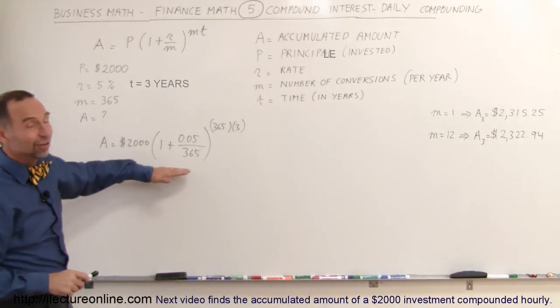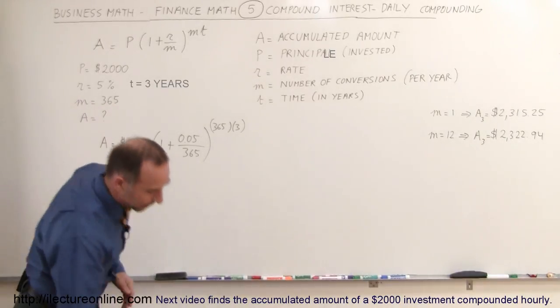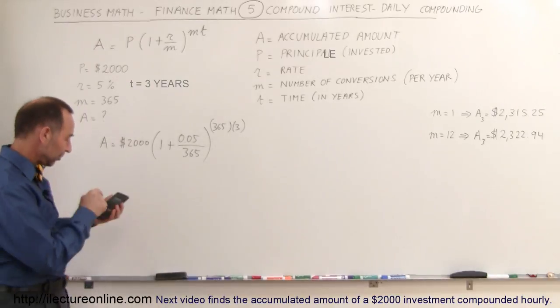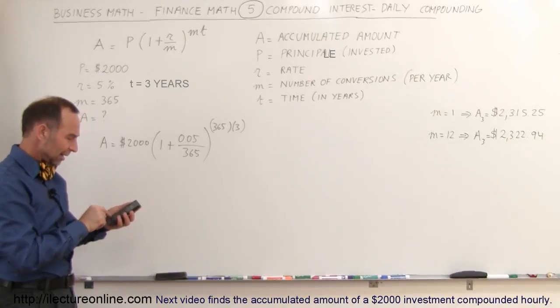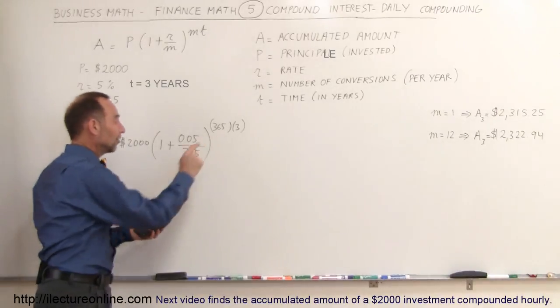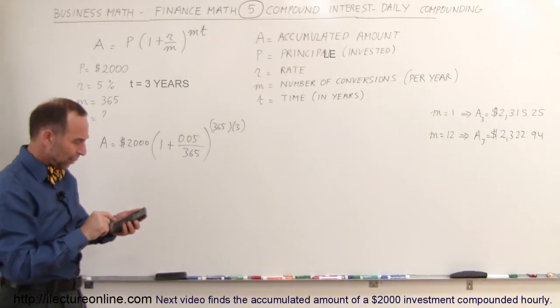You can see that this would be very difficult to do without a computer or calculator. So starting from inside out, we go 0.05 divided by 365, add that to one, now raise that to this exponent using the x to the y button,